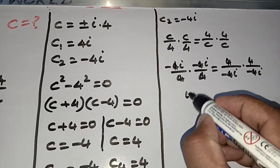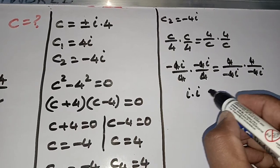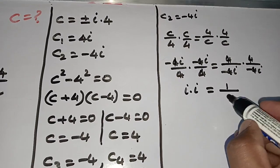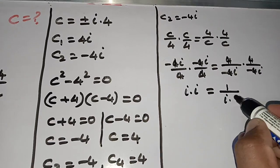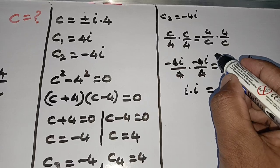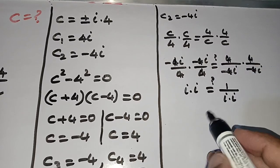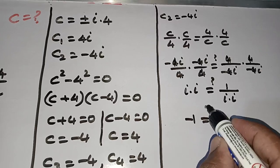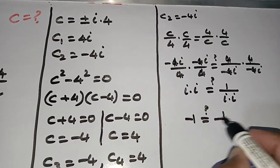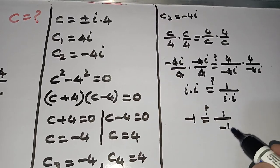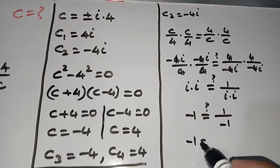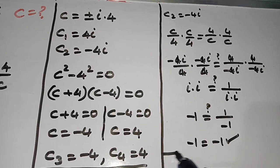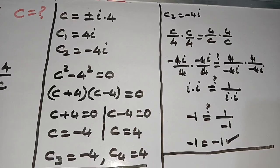After cancelling, we have i times i on the left, and on the right also i times i (since minus of minus is plus). i times i = -1 on both sides. So -1 = -1. We have verified this case as well.